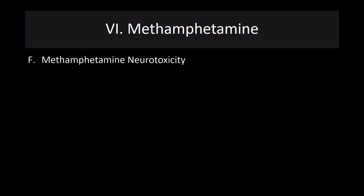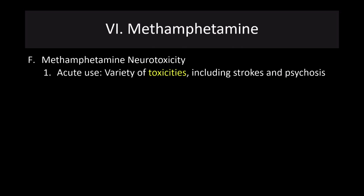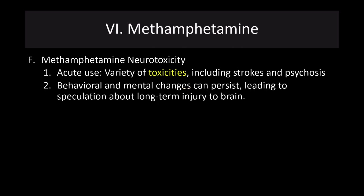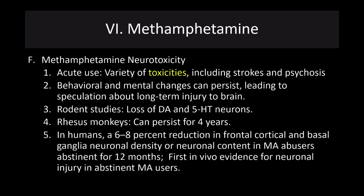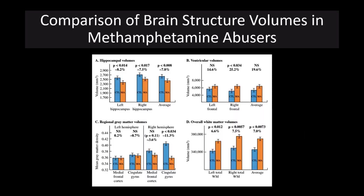Methamphetamine is very neurotoxic. In acute use, there are a variety of toxicities, including strokes and psychosis. Behavioral and mental changes can persist, leading to speculation about long-term brain injury. In rodent studies, we see loss of both dopaminergic and serotonergic (5-HT) neurons. In the rhesus monkey, this has been shown to persist for four years after use. In humans, we see about a 6 to 8% reduction in frontal, cortical, and basal ganglia neuronal density in methamphetamine abusers who are abstinent for 12 months. There is clear in vivo evidence for neuronal injury in abstinent methamphetamine users.